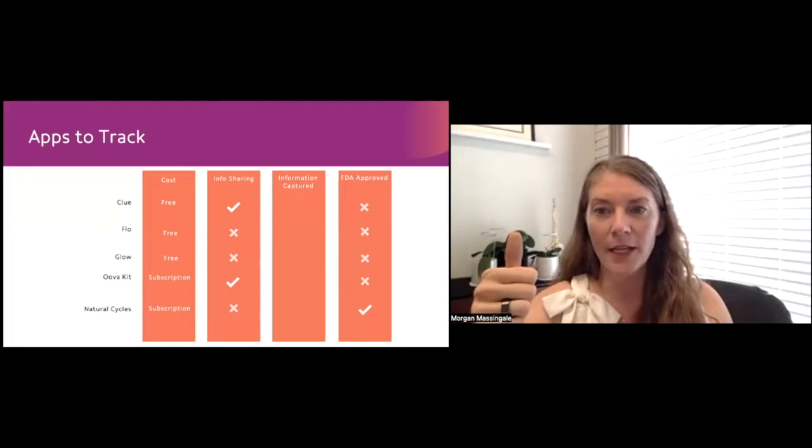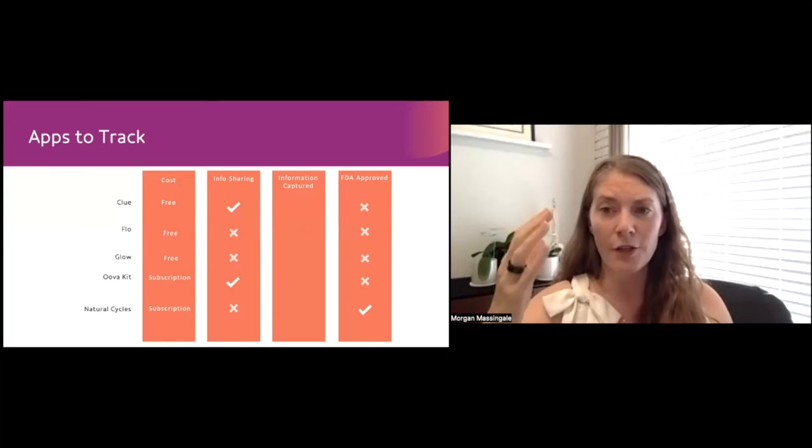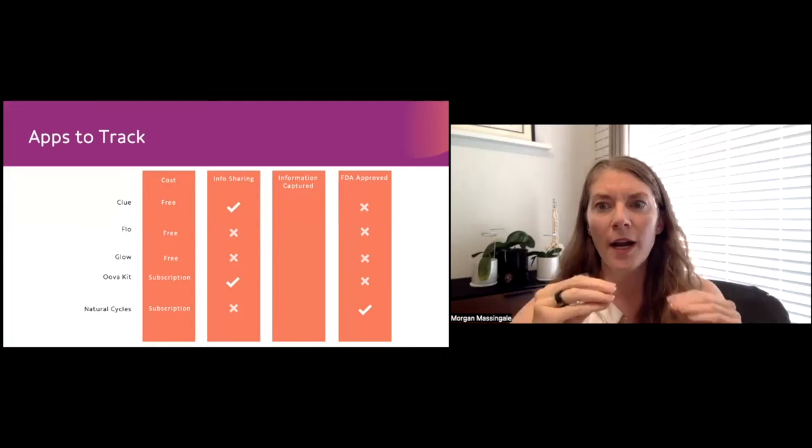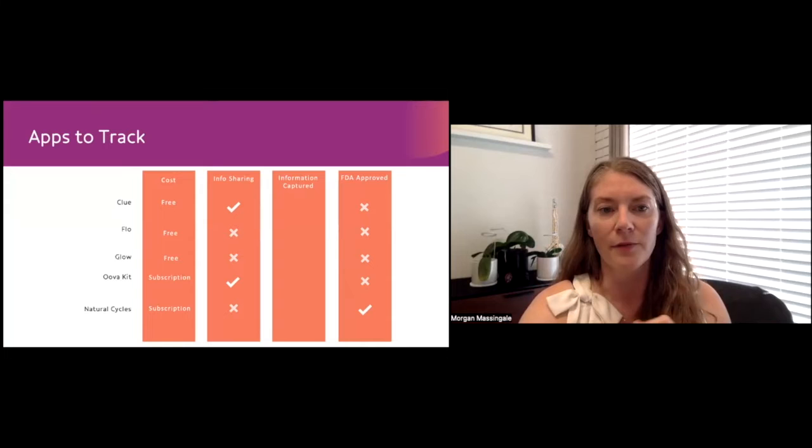So this is a lot of information, right? We're tracking how many days we're bleeding, how long it is between bleeding. We're tracking either a basal body temperature, cervical mucus, or LH positive strips. There's a ton of information, right? So how do you best organize this to bring all of this to your physician? And there's a few apps out there that are actually super helpful in capturing this information.